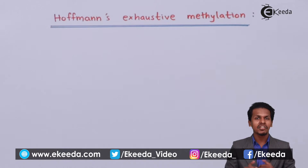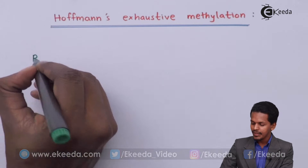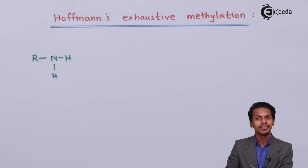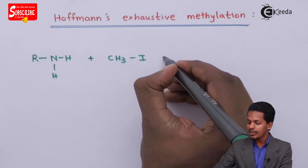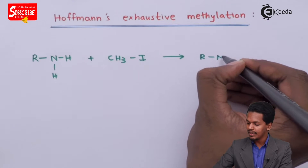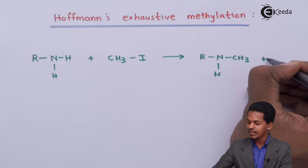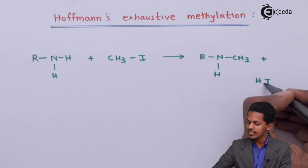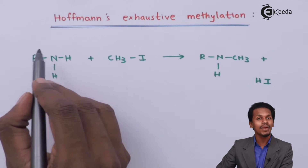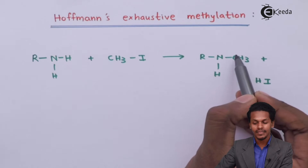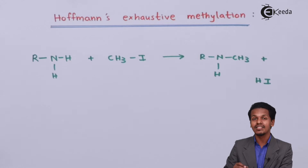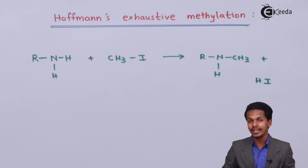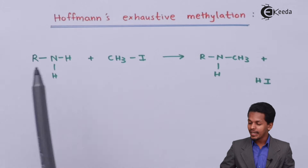Hoffman's exhaustive methylation is the methylation of an amine. For example, if we have a primary amine RNH₂ and treat it with CH₃I, the product we get is RNHCH₃ along with the byproduct HI. Here the primary amine is associated with CH₃ because of the replacement of a hydrogen atom by CH₃, which is why this reaction is called methylation of amine — converting a primary amine into a secondary amine.